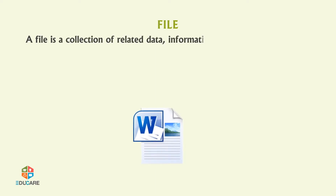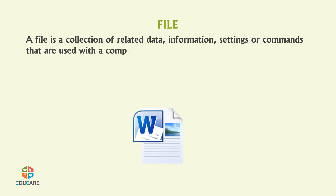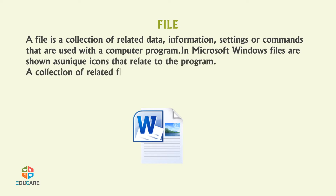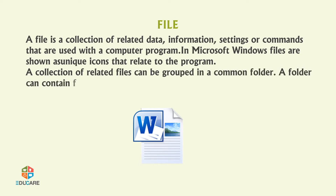A file is a collection of related data, information, settings, or commands that are used with a computer program. In Microsoft Windows, files are shown as unique icons that relate to the program. A collection of related files can be grouped in a common folder. A folder can contain files as well as other folders.